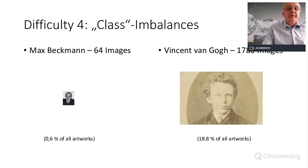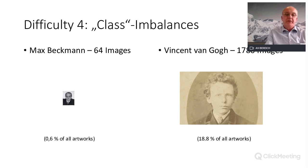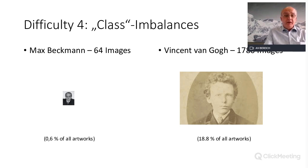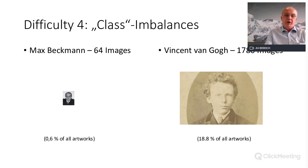The fourth difficulty is class imbalance. For example, from Max Beckmann there are only 64 images in the dataset, while from Vincent van Gogh there are 1,780 images. This class imbalance problem can be at least partly solved, and in reality it was also part of the project to level out these class imbalances.